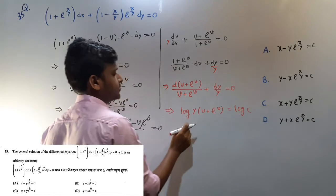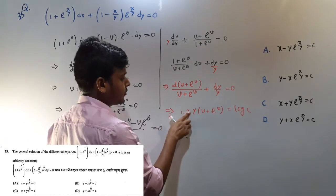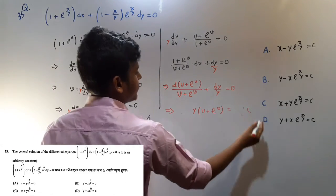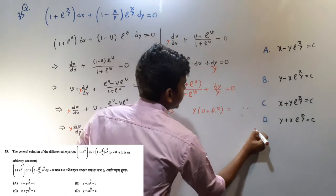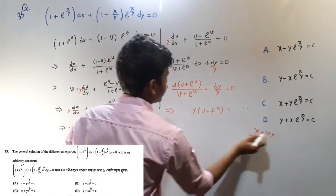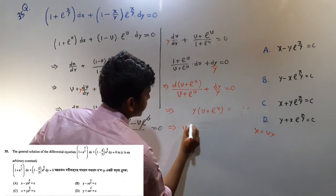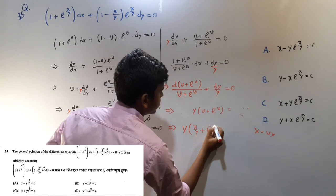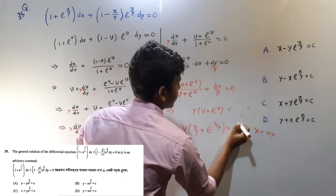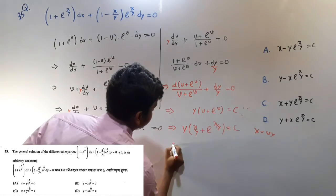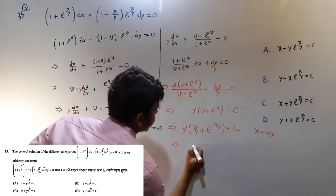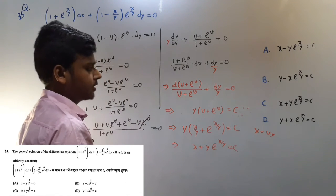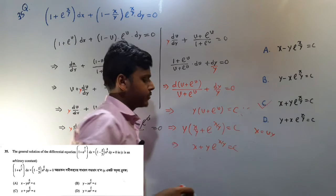So this is log log. So what do we do? It is c. So this is c. So: x/y plus e to the power x/y — I can say that c is equal to c. y is equal to this. x plus y to the power x/y is equal to c. So the option is equal to c — option is true.